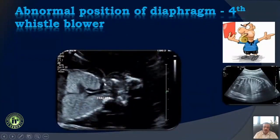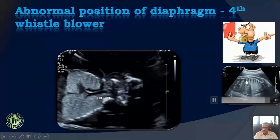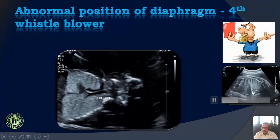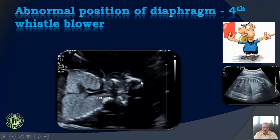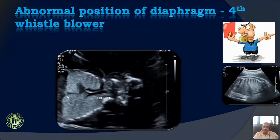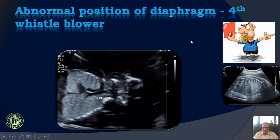The fourth whistleblower is the position of the diaphragm. Normally, even without respiratory movements, the diaphragm shows a slight convexity toward the chest — that is a normal appearance. If the diaphragm is flat or becomes convex toward the abdomen, that is another whistleblower that something is wrong in the lungs or thorax.